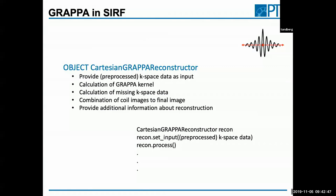Question: you can only do GRAPPA if you've got multiple coils — is that right? Yes, exactly. Both GRAPPA and SENSE — all parallel imaging techniques — rely on having multiple coils seeing the same object, combining this information to eliminate undersampling artifacts. In clinical practice, essentially every acquisition uses multiple receiver coils, with specialized coils for different anatomies like shoulder or knee. SENSE and GRAPPA are the most common forms of acceleration, and most scans will use one of these two methods.